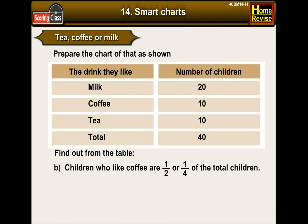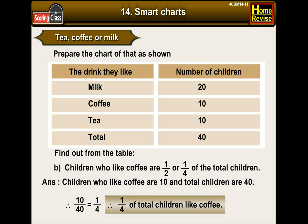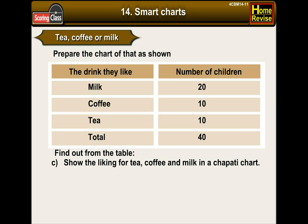B. Children who like coffee — are they half or one-fourth of the total children? Children who like coffee are 10, and the total number of children is 40. Therefore, 10/40 = 1/4, which means one-fourth of total children like coffee. C. Show the liking for tea, coffee, and milk in a chapati chart.